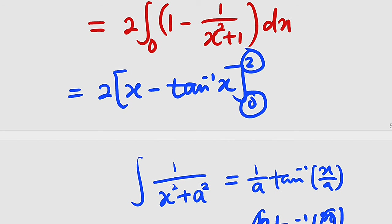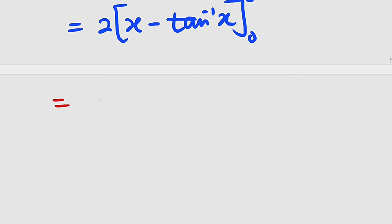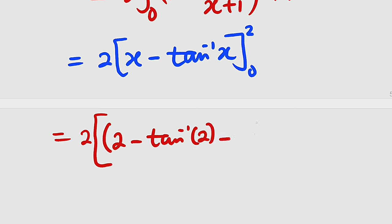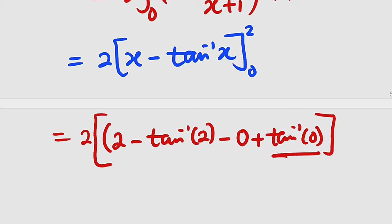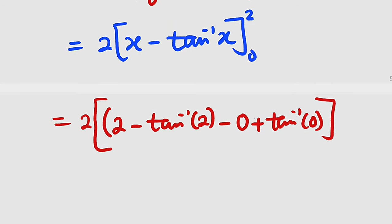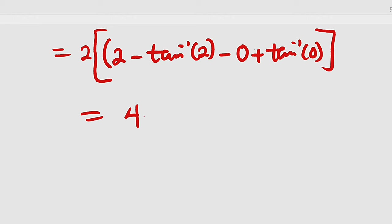Substituting the limits: at the upper boundary x = 2, we get 2 − arctan(2). At the lower boundary x = 0, we get 0 − arctan(0). Since arctan(0) = 0 and 0 − 0 = 0, the lower boundary contributes nothing. So we have 2 times (2 − arctan(2)), which equals 4 − 2·arctan(2).